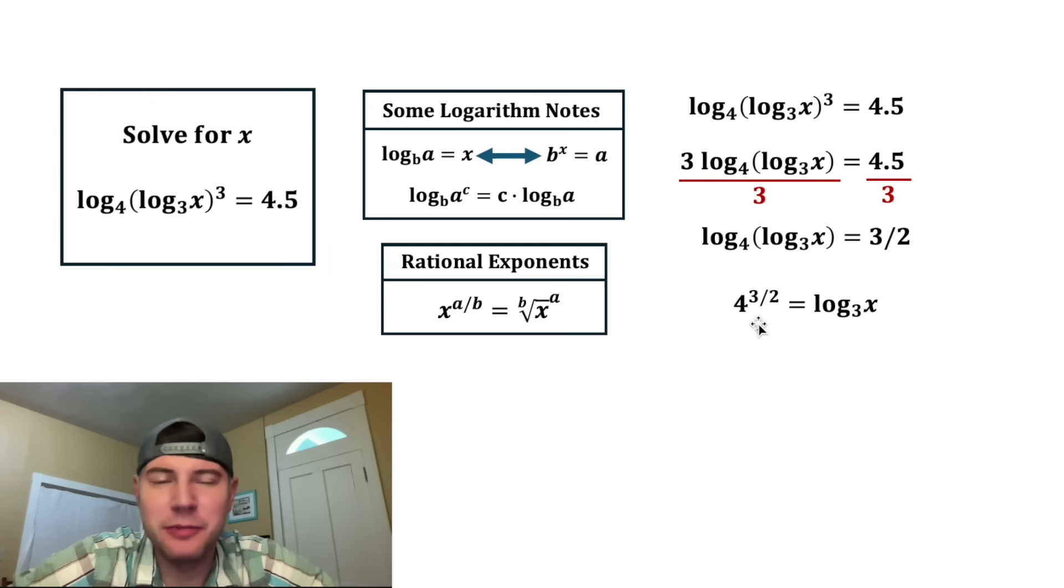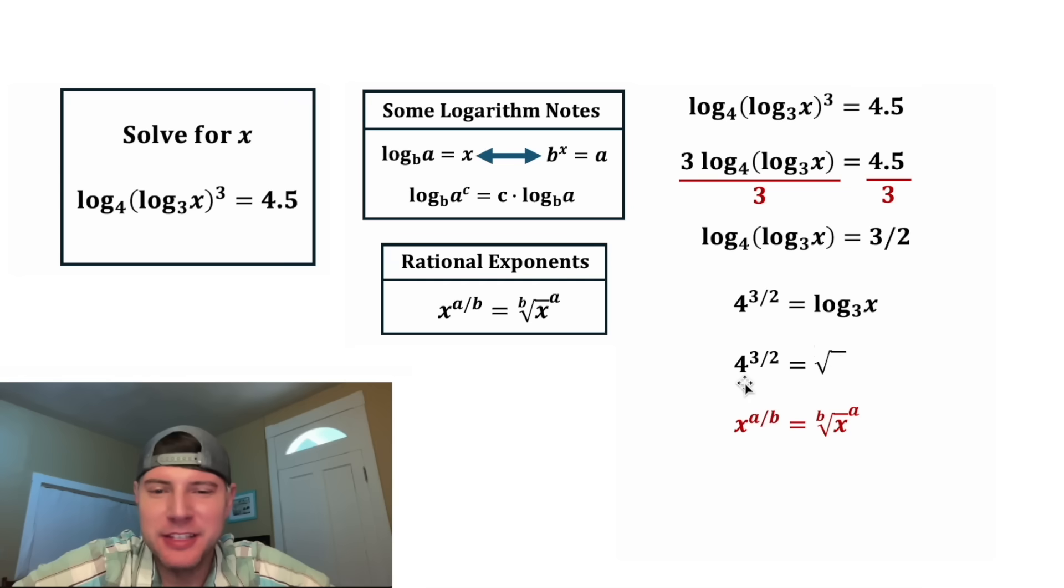On the left-hand side, we have a rational exponent. Let's play around with that for a second. Here are the notes for that. We know there's going to be a radical, and then this base of 4 is going to be inside the radical. And the 2 in the denominator tells us it's a square root, and this 3 is going to be the exponent. And then typically with square roots, we don't include the 2. So we have 4 to the power of 3 over 2 is the same thing as the square root of 4 to the power of 3.